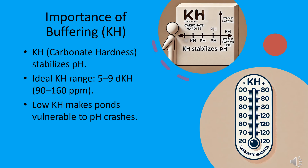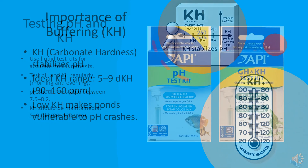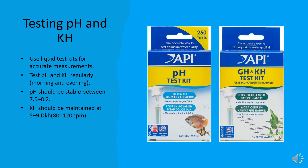When KH is too low, your pond is vulnerable to sudden pH crashes. To keep your pond's pH stable, regular testing is essential. Use liquid test kits for accurate readings.